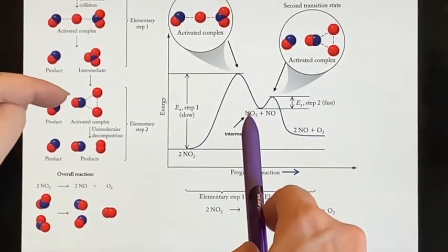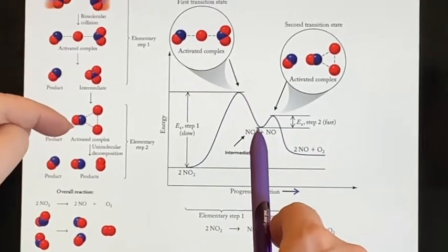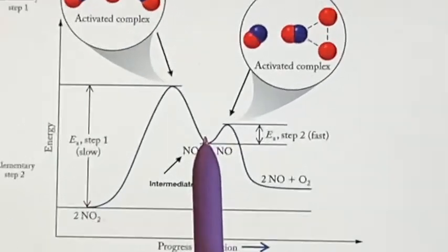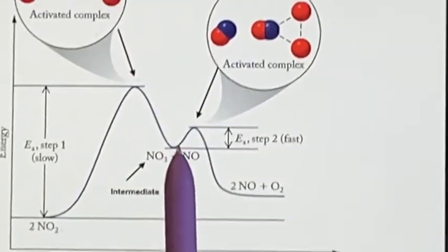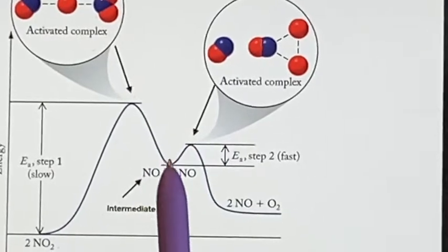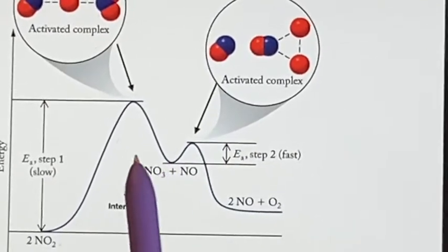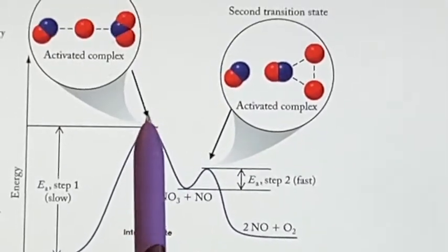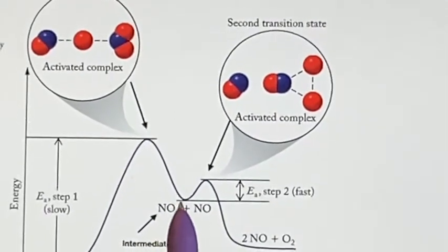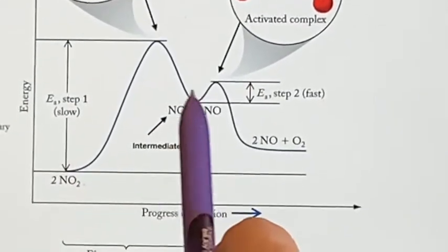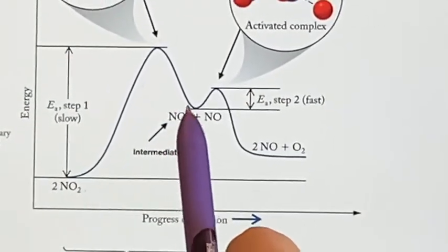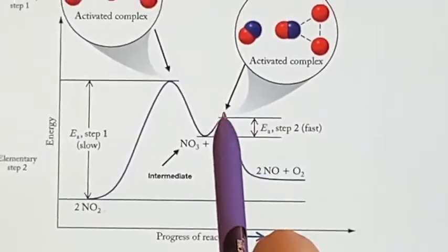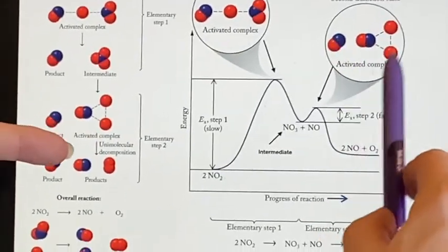So in the next step, it has to undergo a decomposition. Now that is also going to take energy because you're breaking bonds again, the nitrogen-oxygen bonds have to be broken. But because this stuff isn't very stable, it is relatively stable compared to this activated complex, but it's not nearly as stable as our original was, there's still plenty of energy around for it to take this jump up and decompose, forming a new activated complex,